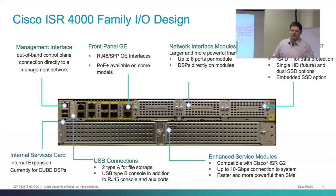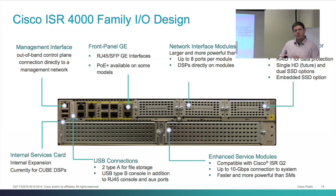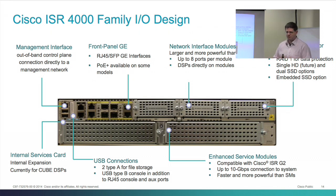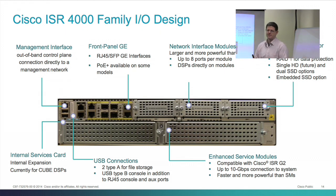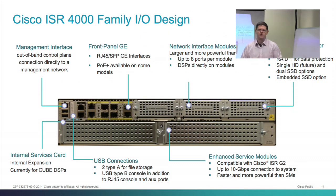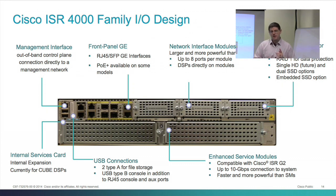On the front panel, we always give you some interfaces for free on the ISRs. The number varies with platform — higher in the portfolio gets more. On the 4451, you get four. Whenever possible, we try to give you dual-PHY interfaces, meaning they're either RJ45 or SFP — not both at the same time, but either/or. So if you need a fiber connection to a switch, you can do that; if you need copper, it's there.